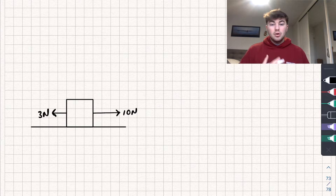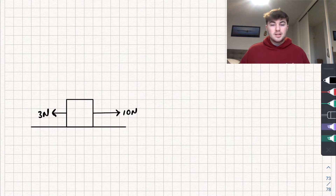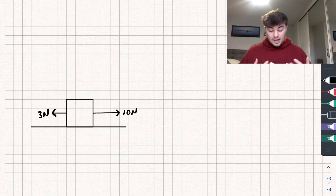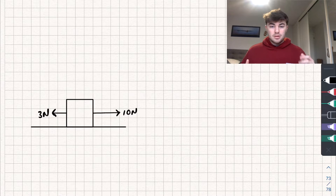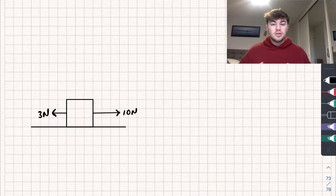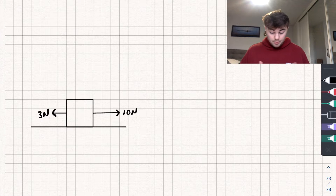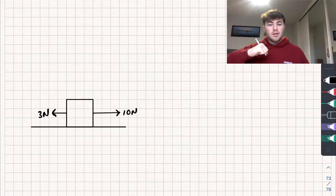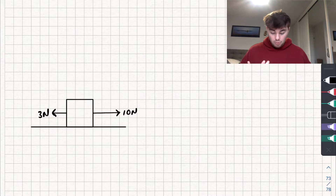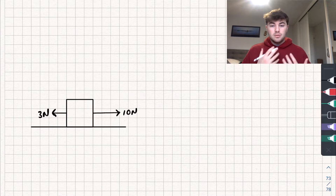Here we have a box — it might be a particle — and we have two forces acting on it. We've got 10 newtons of force acting towards the right-hand side, so someone could be pulling the box with 10 newtons to the right, but at the same time someone else is pulling the box to the left with 3 newtons. The resultant force is: if we had one singular force acting on the box in one direction, what would that force be? With 10 newtons going one way and 3 newtons acting against it, overall we would have 7 newtons acting towards the right.